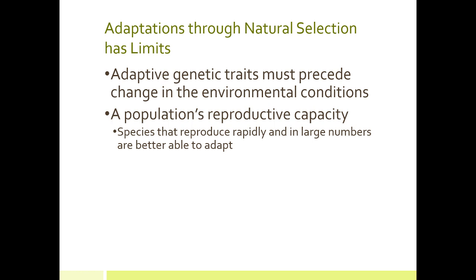When we talk about natural selection, there are limits. Adaptations have to precede the change in the environmental condition. It's not that climate change is occurring and getting warmer, so species are starting to adapt to that higher temperature — that's not how it works. There has to already be a species with the mutation that allows it to have a higher tolerance, giving it a better chance of survival than other members of its species. Reproductive capacity is also very important.